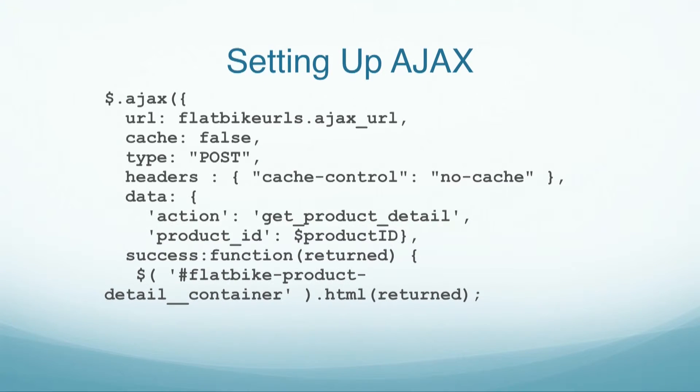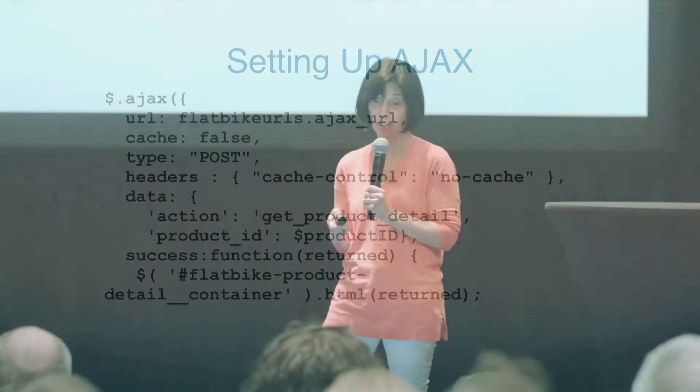Once that's set up, we have to handle what happens when you actually click on a product thumbnail. What you're seeing here is a little jQuery that I wrote to handle the AJAX. I'm passing in a URL — which is the FlatBikes AJAX URL. The other important things are the action, which is get_product_detail, and the product ID, because we want to get the right product returned. I was able to retrieve the product ID from the class name on the product thumbnails that go across the page — I just parsed that out and that seemed to work.